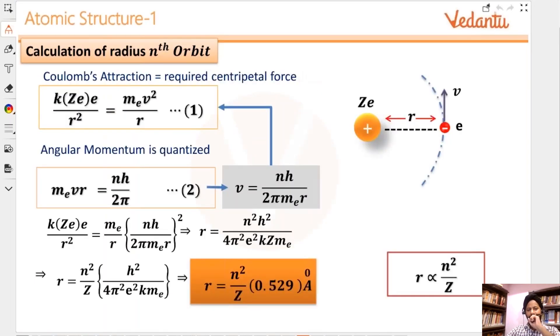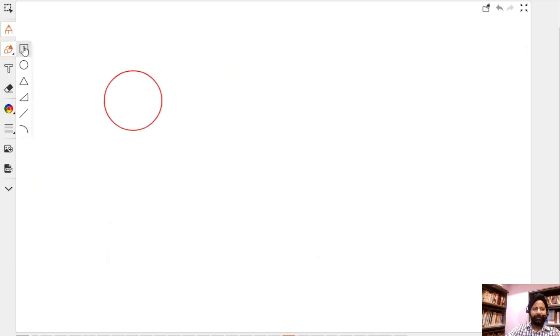So let's say, and I will use the same symbols, so let's say there are Z number of protons here, right? It's hydrogen-like, it's not hydrogen, it is hydrogen-like. So and then you have this electron here.